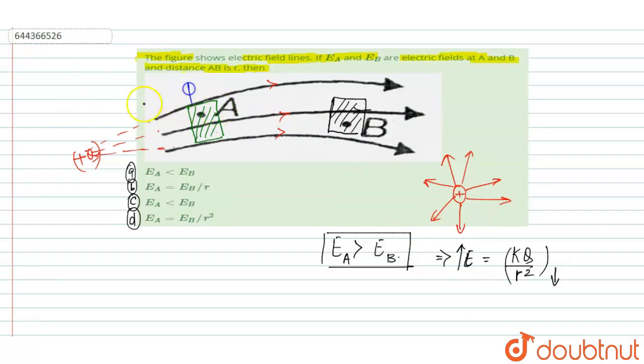When we see, let us consider this is length A, and this is distance R is given. Then definitely the distance of A with respect to the plus Q charge is less than the distance of point B with respect to Q.